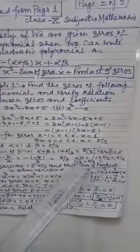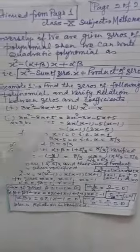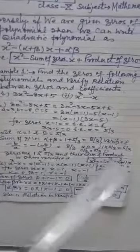The product formula is c/a, and c = 5, a = 3, which is also 5/3. Hence the relation between sum and product of the zeros is verified. So the zeros are 1 and 5/3, and their sum and product is thus verified.